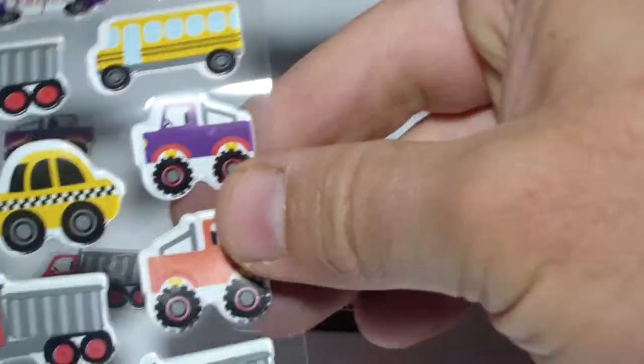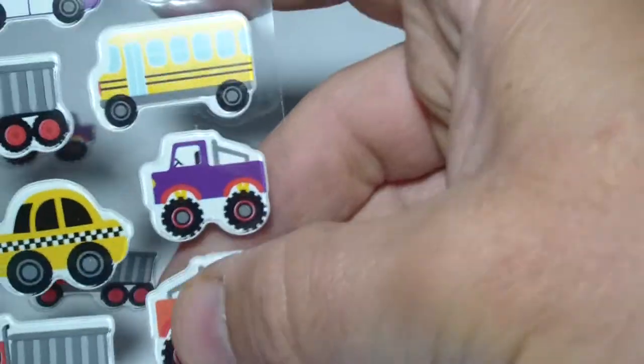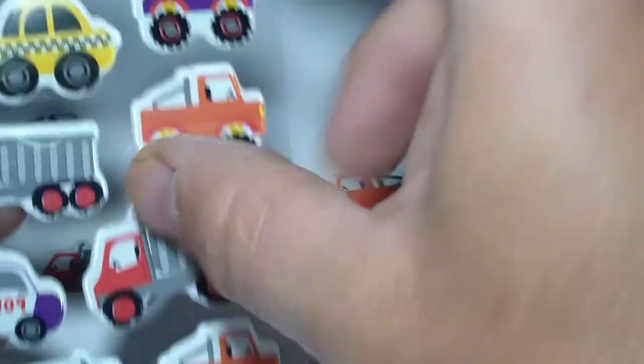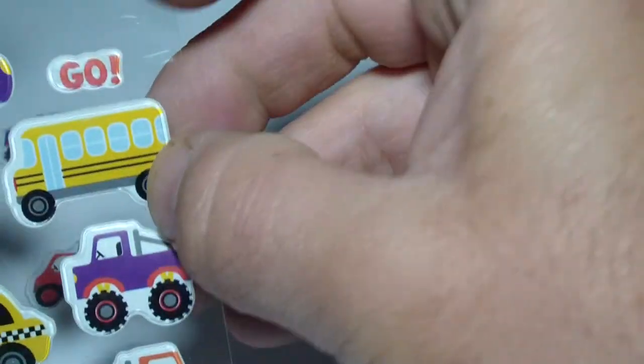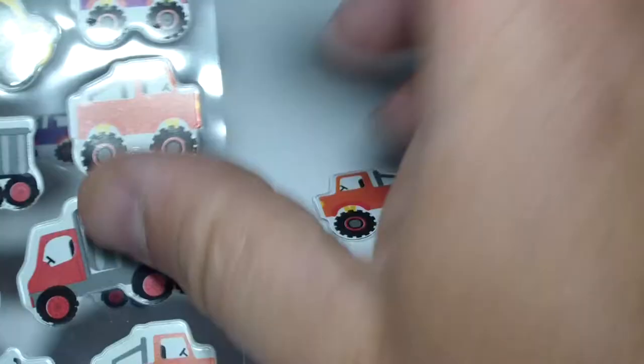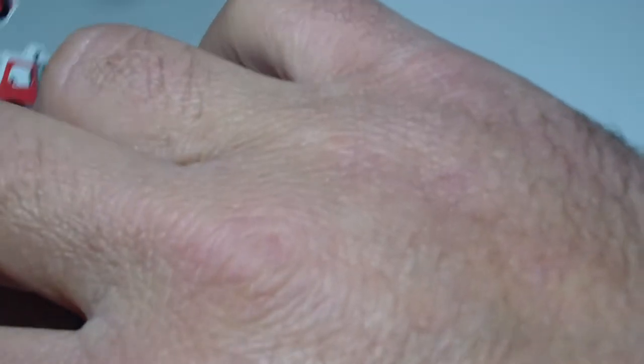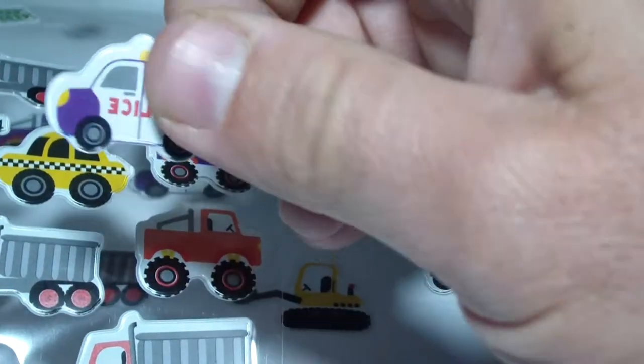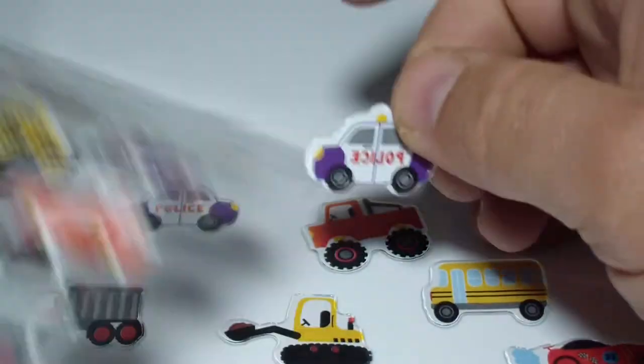You see we have also lots of monster trucks. And we have a police car. Now we have a police car that goes like this and we have a police car that goes like this. I don't really get it, why would they do two police cars.